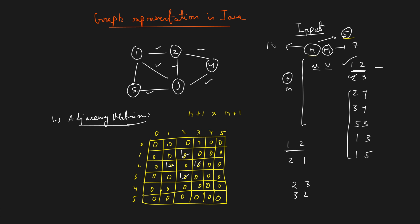The disadvantage of using an adjacency matrix is memory. If N is in the range of 10^5, you cannot create a 2D array of 10^5 by 10^5 — that will give you a memory limit exceeded error. In that case, you have to use the other approach.